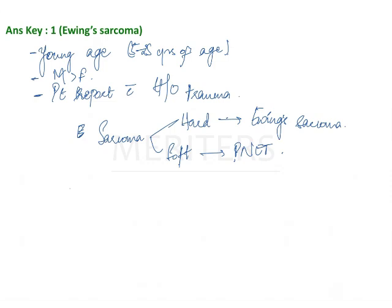Under the microscope, the cells of Ewing sarcoma are round. They are described as round cells with hyperchromatic nuclei, with a 4:1 reversal of the N to C ratio — the nucleus occupies about two-thirds to the complete cell.